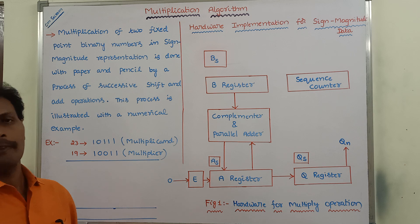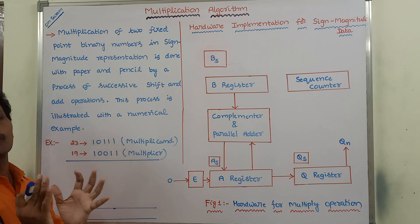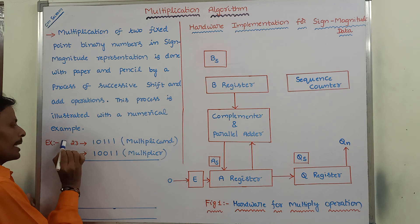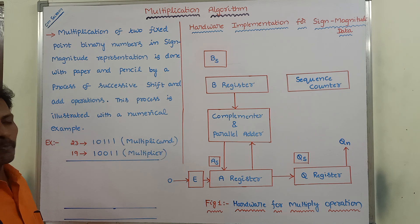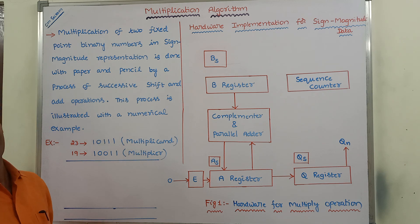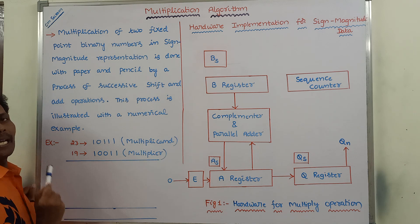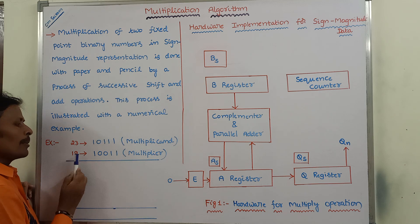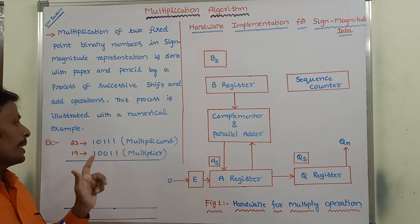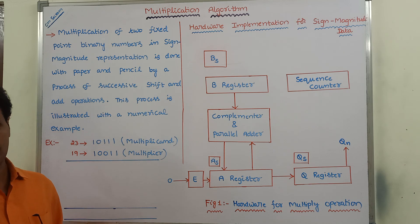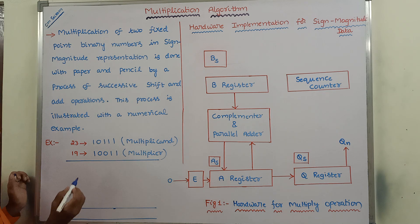Suppose we want to multiply 23 with 19. 23 can be called as the multiplicand and 19 can be called as the multiplier. First we have to convert the multiplicand and the multiplier into their equivalent binary form. 23 binary equivalent is 10111, and 19 binary equivalent is 10011.